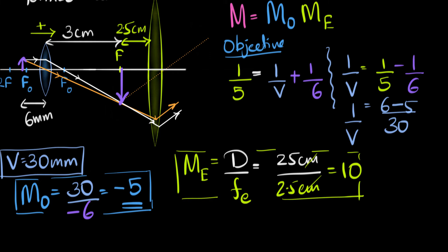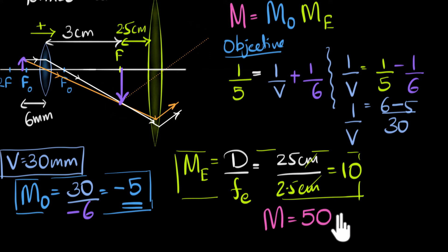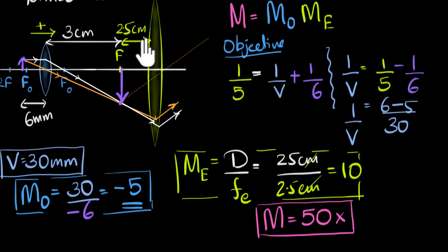The total magnification of the compound microscope is the product of the two: the image gets magnified 5 times by the objective and then further magnified 10 times by the eyepiece. So 5 × 10 = 50, written as 50×. Additionally, if asked for the distance between the objective lens and the eyepiece, from the diagram we can see it is 3 centimeters plus 2.5 centimeters, which is 5.5 centimeters.